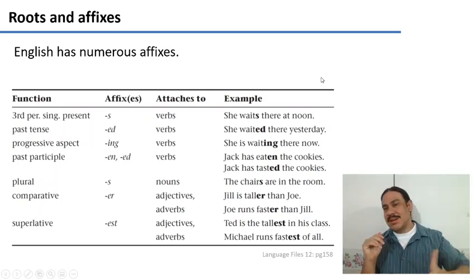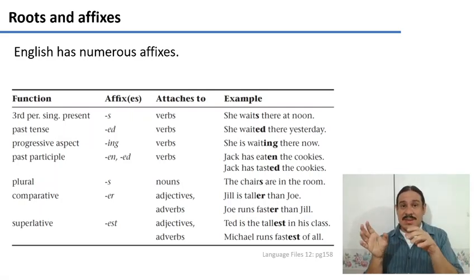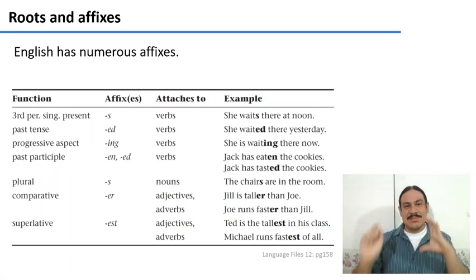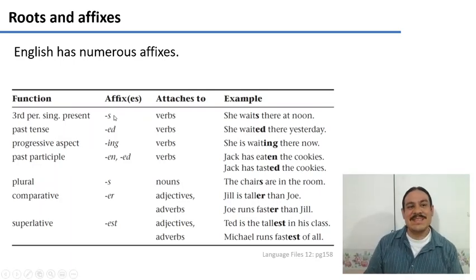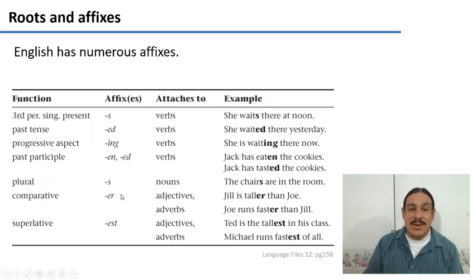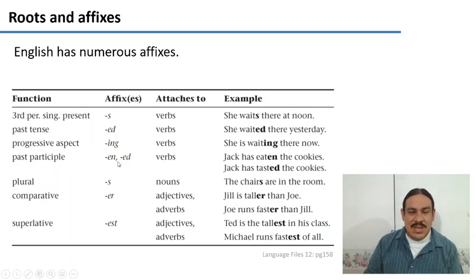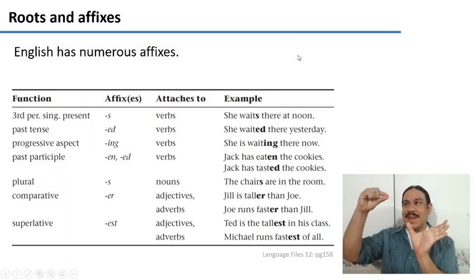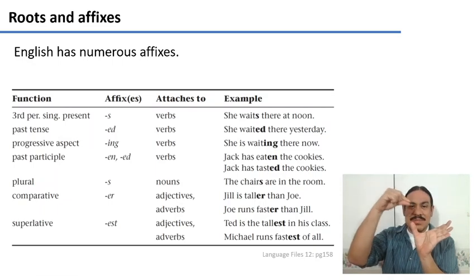So we have morphemes that are bound and free, and some morphemes that are the root and the affixes. English has a lot of affixes — for example, the 's' for third person singular of a verb, 'ed' for past tense as in 'waited,' 'ing' in 'waiting' indicating progressive aspect, and 'er' for the comparative of an adjective like 'taller.' All of these are affixes of English, and they have to be bound to a root such as 'wait' or 'tall.' So we have roots and affixes that attach to them and add some additional part of meaning.